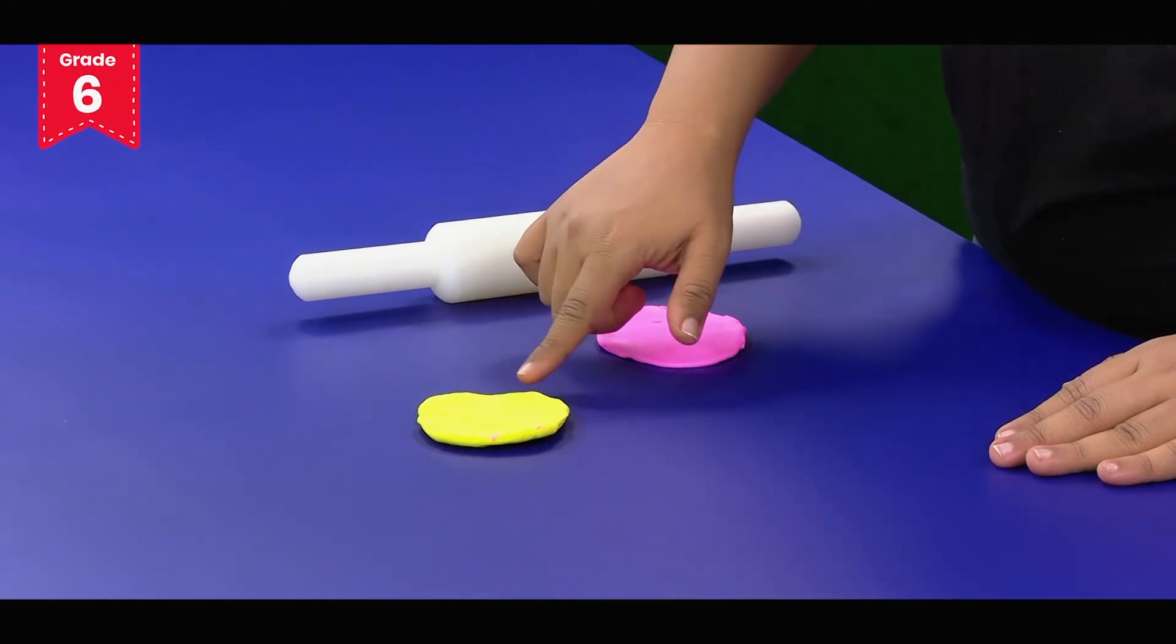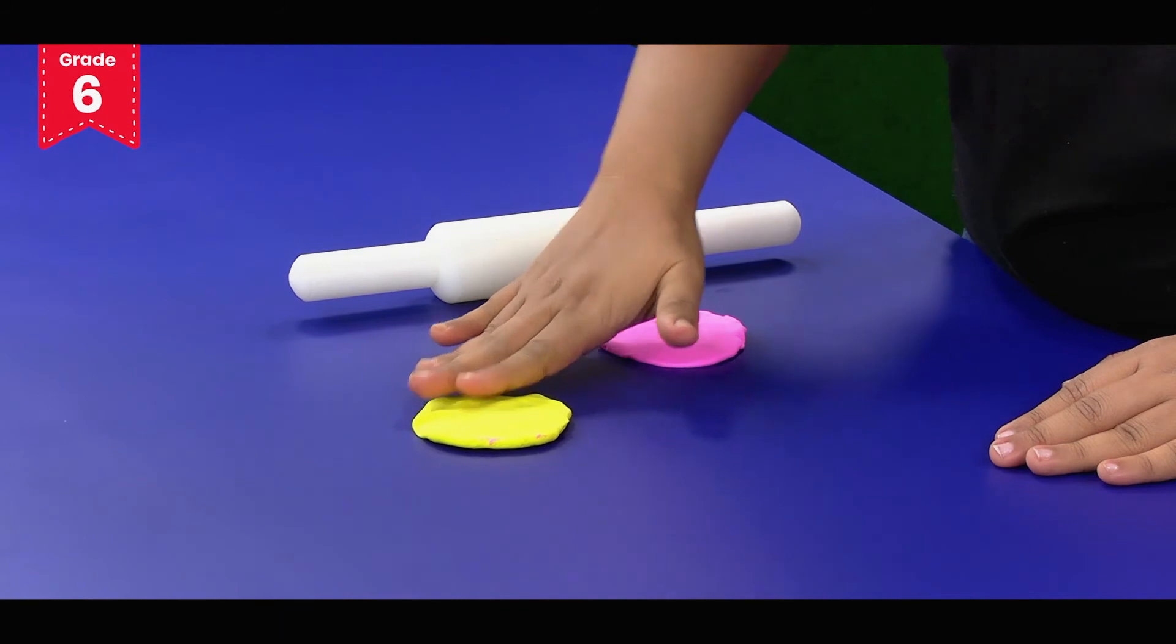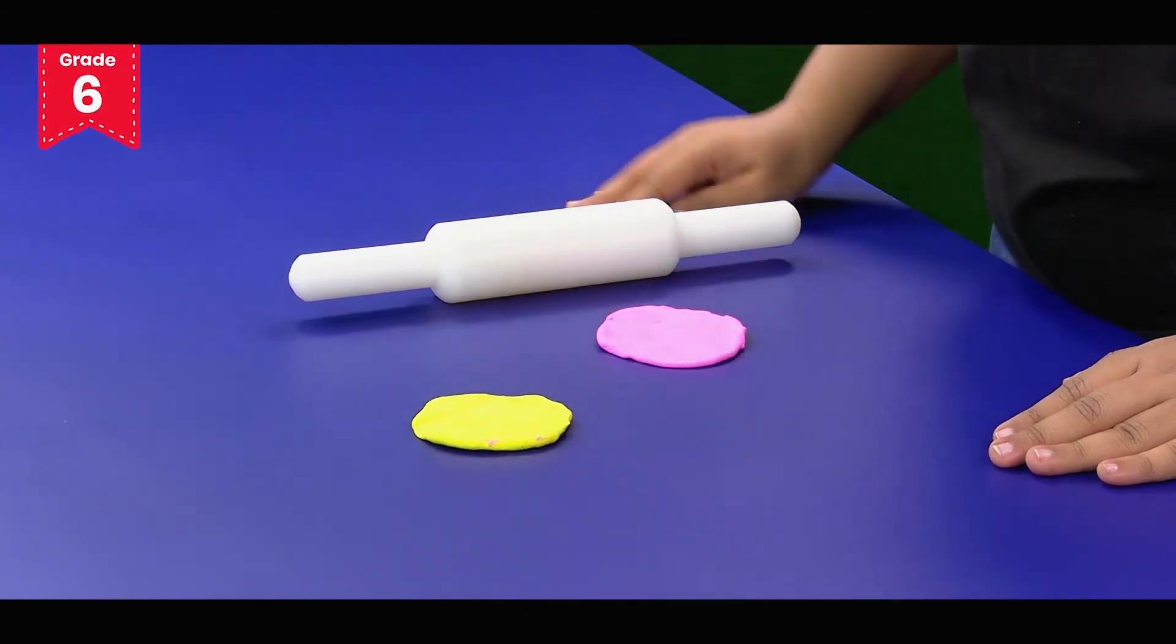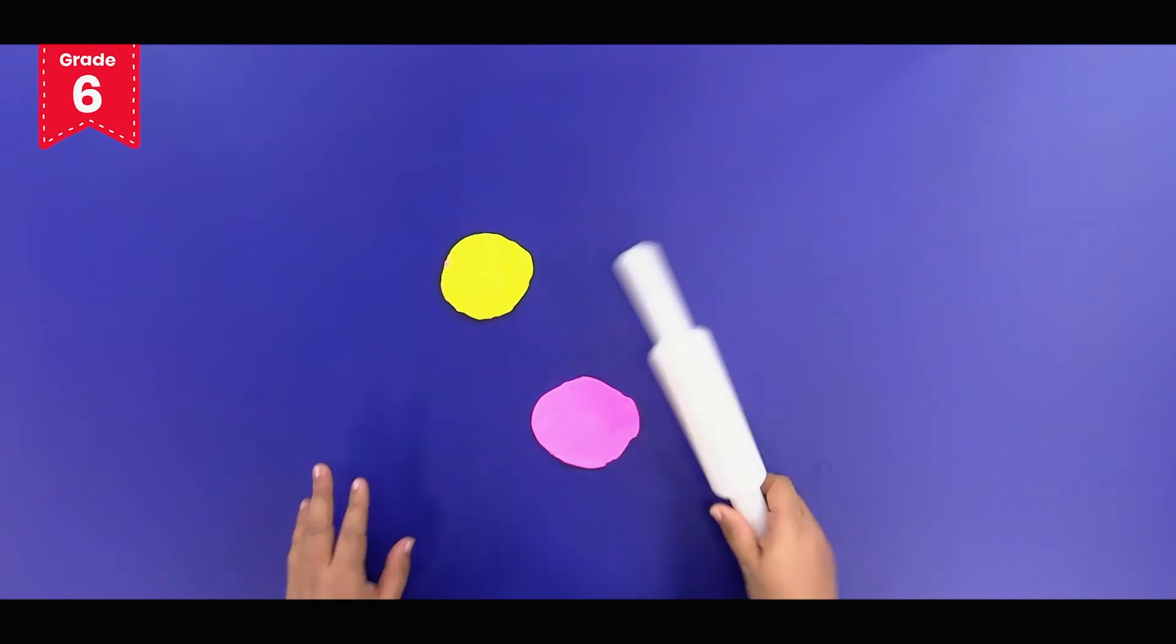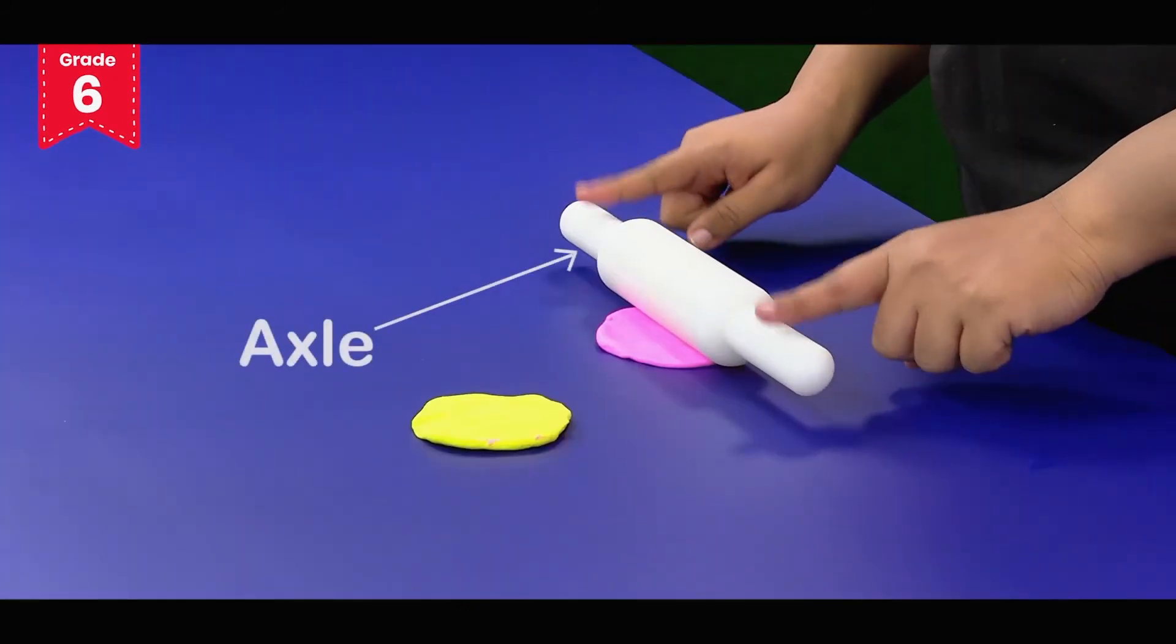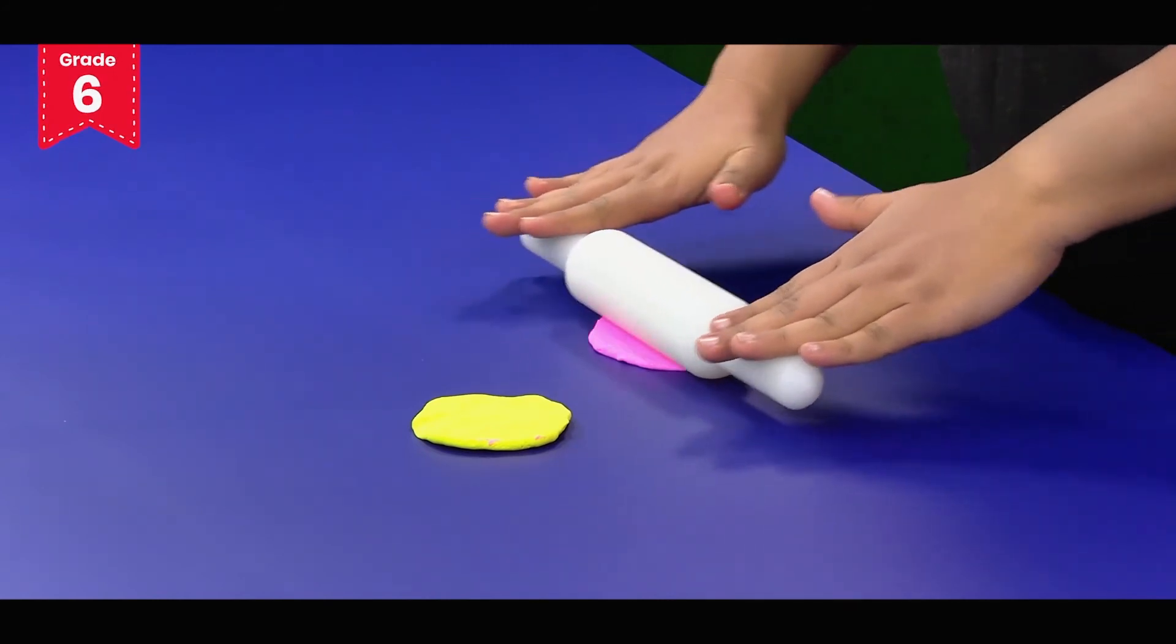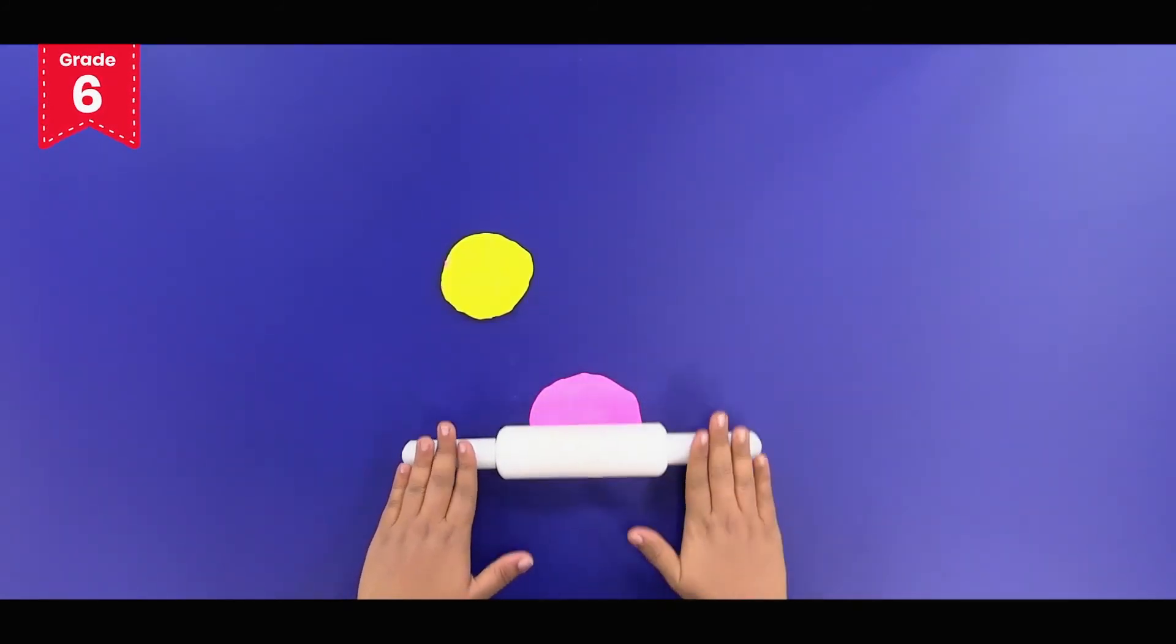When we use our hands to flatten the clay, we need to apply force over the complete surface area and that's why we need more force. But while using a rolling pin, which is an example of a wheel and axle, we only apply force on the axle which in turn transfers the force to the wheel and distributes it over a larger surface area.